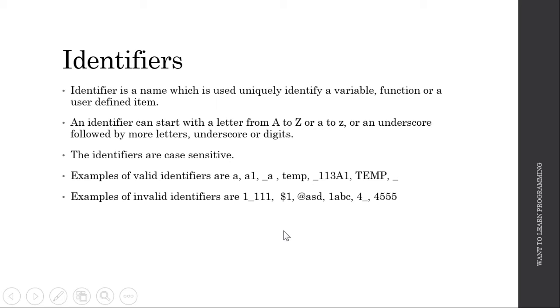The first one starts with a digit, which opposes the rule saying it should start from letters or an underscore. The second one consists of a dollar symbol, which contradicts the rule. The third one has an at symbol, which contradicts the rule. The fourth one starts with a digit. The fifth one starts with a digit four, and the sixth one starts with a digit and does not have a letter or an underscore.